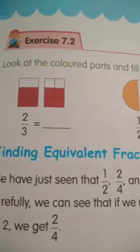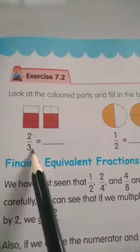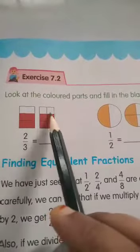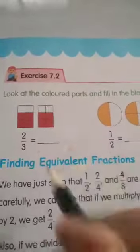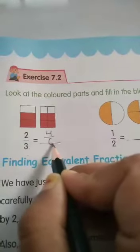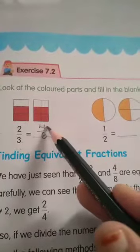Let us solve Exercise 7.2, page number 99: Look at the colored parts and fill in the blanks. They have given 2 by 3 — total parts are 3 and 2 are shaded, so 2 is the numerator and 3 is the denominator. Next, total boxes are 6, and 4 are shaded parts, so I have written 4 as numerator and 6 as denominator — that gives 4 by 6.